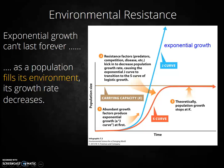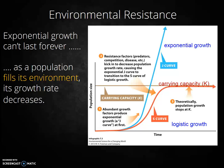In logistic growth, the population begins to grow exponentially but then levels out as it meets environmental resistance. As you plot population numbers versus time, the line makes an S-shaped curve. See infographic 9.3, shown here.